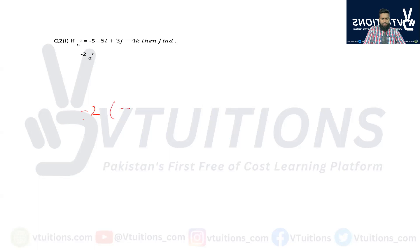Like -2 into (-5 iota + 3j - 4k), and then after 4k, dear students, bracket will close here.